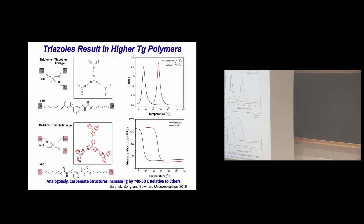Ultimately, this gives us the advantages of step-growth polymerization while building in capabilities from chain-growth polymerization — especially high Tg. Step-growth polymerizations allow a great deal of chemical control, and that's one of the great things you can do with them.